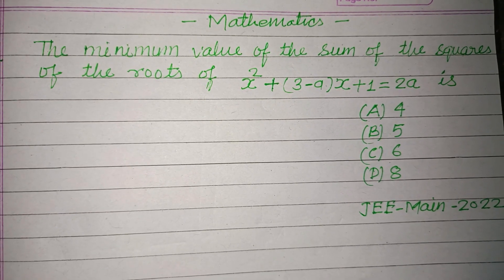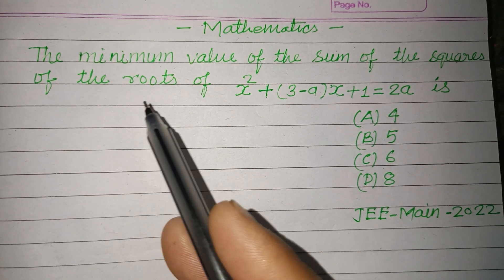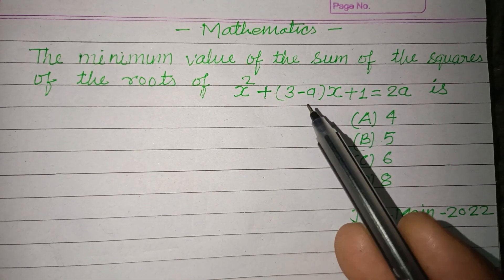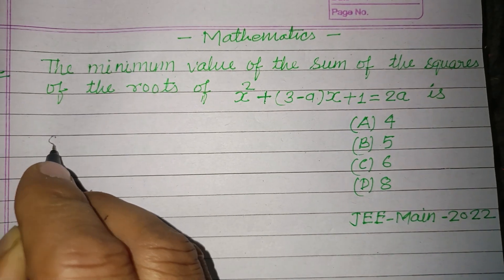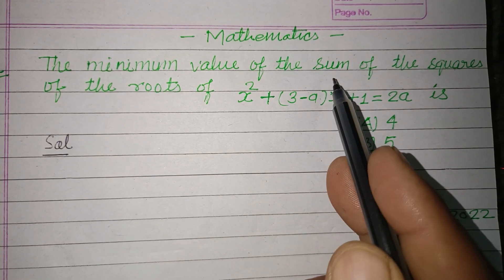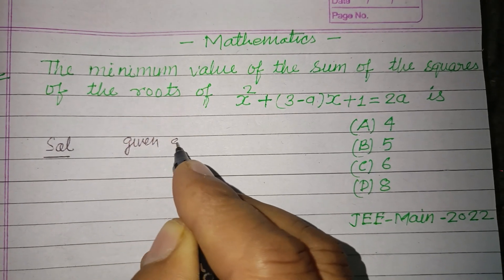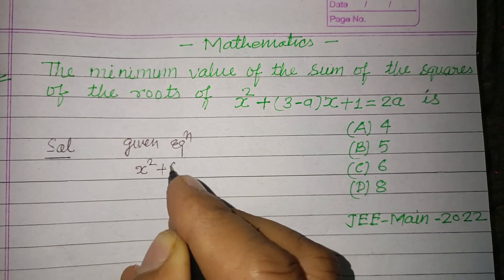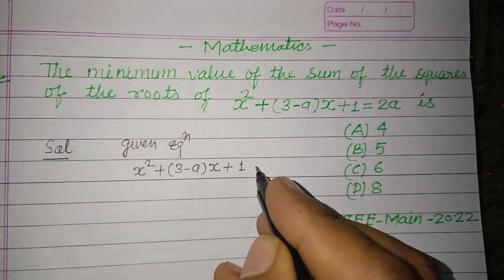Hello students, warm welcome to this YouTube channel. This question is from JEE Mains 2022: find the minimum value of the sum of the squares of the roots of x² + (3 - a)x + 1 = 2a.